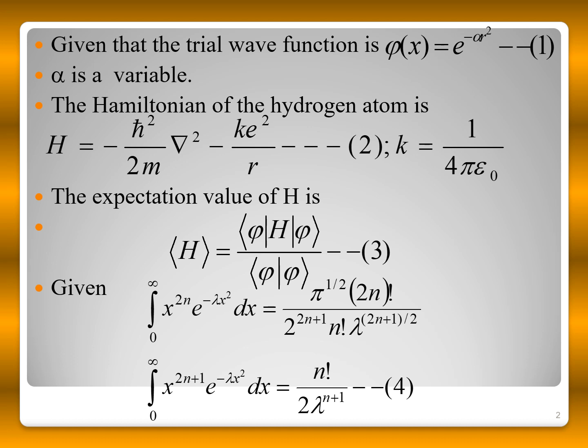The trial wave function given in the problem is a Gaussian function: φ(r) = e^(-αr²), where α is a variational parameter. The Hamiltonian of the hydrogen atom is H = -ℏ²/(2m) · ∇² - ke²/r, representing kinetic and potential energy terms, where k = 1/(4πε₀).